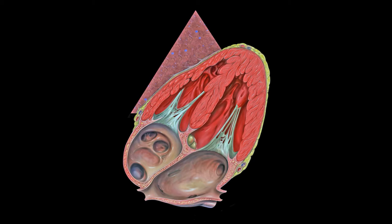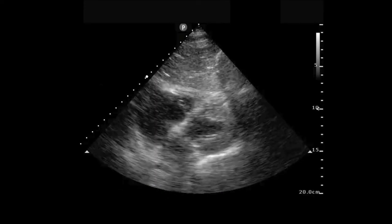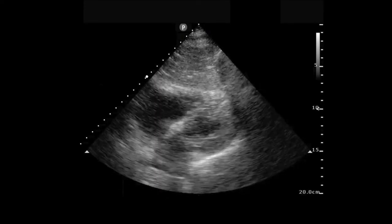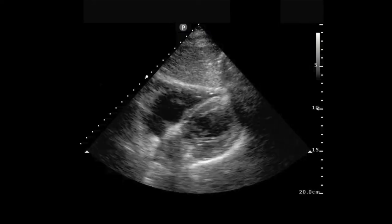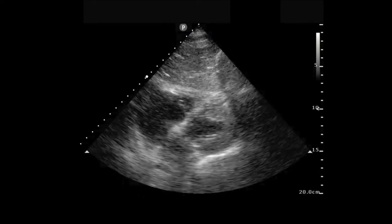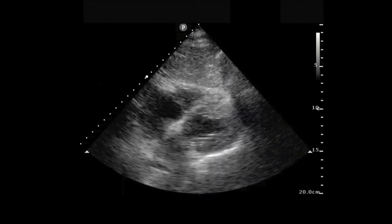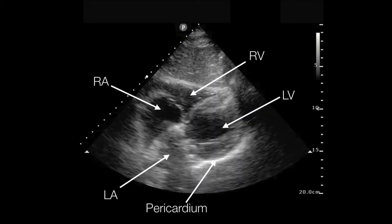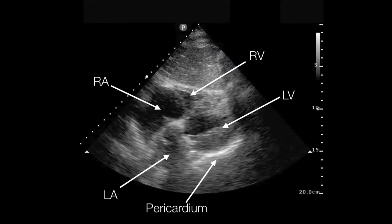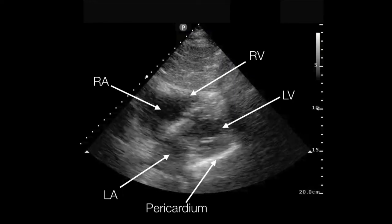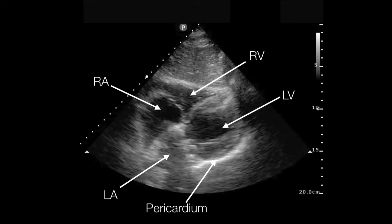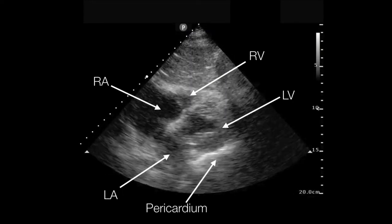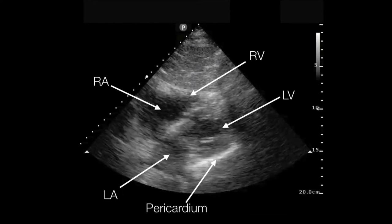The liver is very echogenic and transmits sound very well — it's a great window to look at the heart. You'll see the base or apex of the heart. In the subcostal view, looking up toward the heart from underneath the xiphoid process, we can identify the left atrium, right atrium, left ventricle, and right ventricle. The bright white line surrounding the heart is the pericardium.